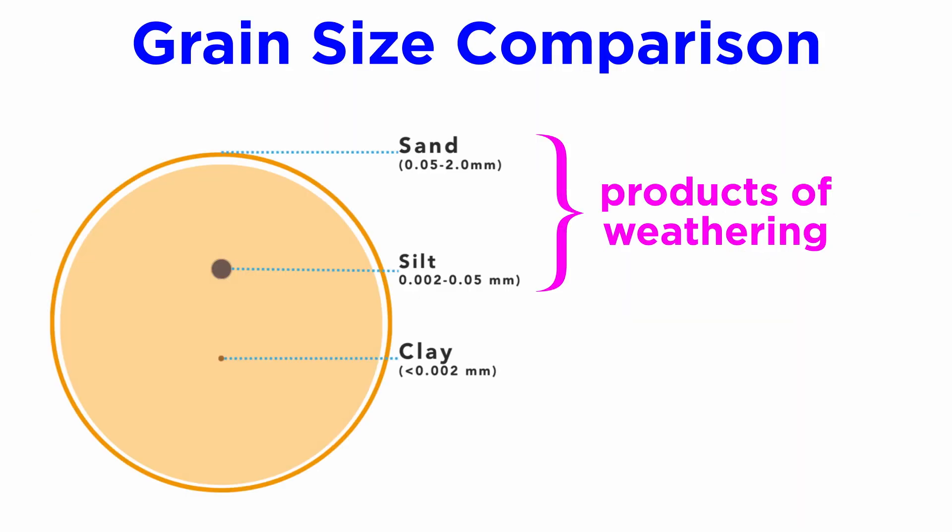Sand and silt are the products of physical and chemical weathering of the parent rock, while clay is most often the product of the precipitation of a dissolved parent rock as a secondary mineral.